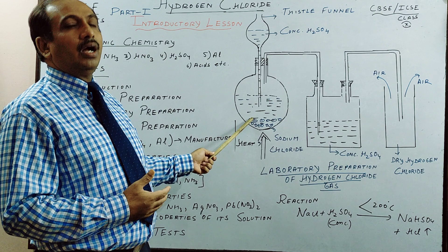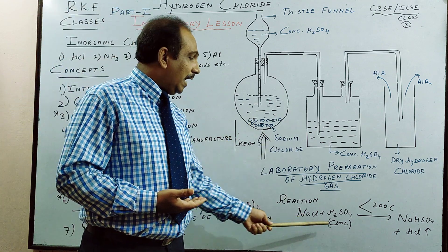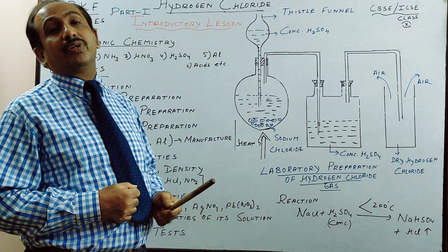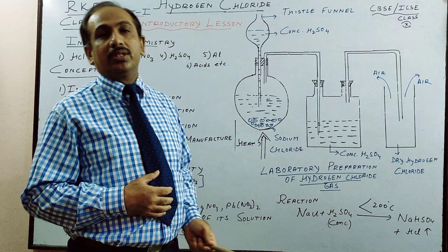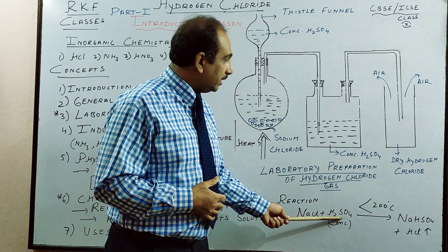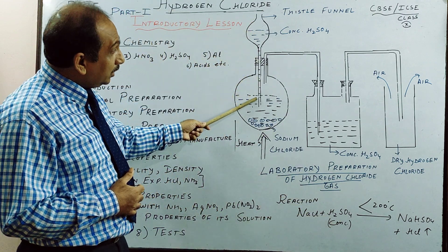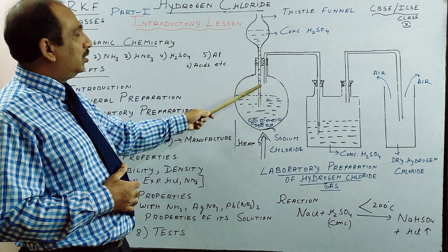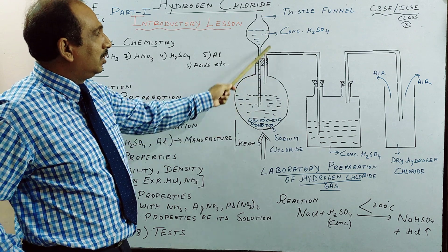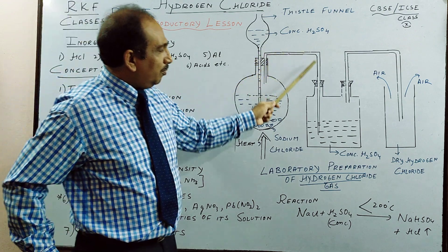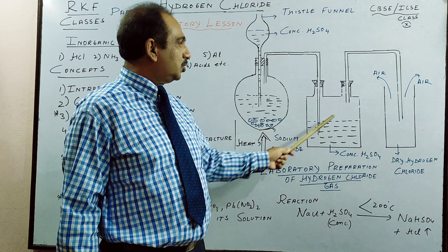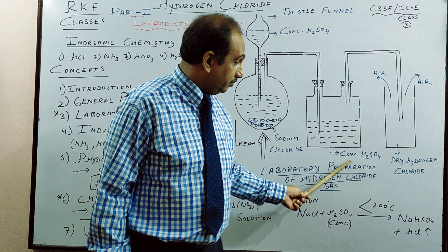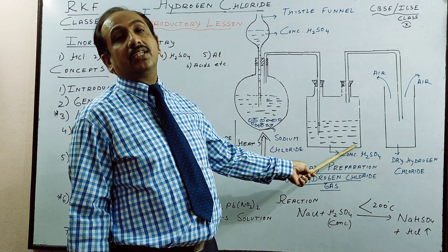We take concentrated sulphuric acid through a thistle funnel; this should go inside. Once you drop it, the thistle funnel should be down. The gas, HCl, will come out. This is a two-mouth wash bottle. Here we have the drying agent, which is again — like the reactant — concentrated sulphuric acid. To make HCl gas we use concentrated sulphuric acid, and for drying we also use concentrated sulphuric acid. This tube should be inside the concentrated sulphuric acid.